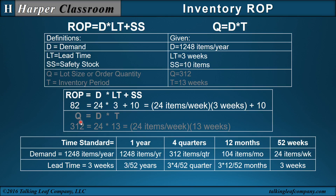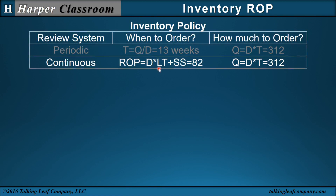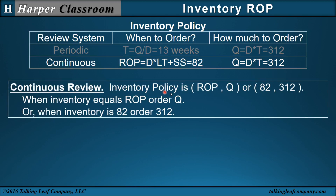We do a similar conversion with the demand for the lot size of 312. Now that we have ROP of 82 and lot size of 312, we can populate the inventory policy in the continuous review system. The inventory policy is ROP, Q: 82, 312 — when inventory equals 82, order 312.